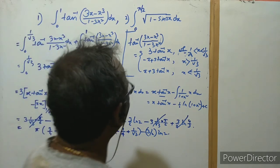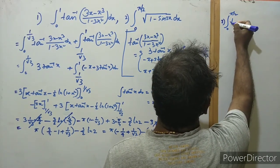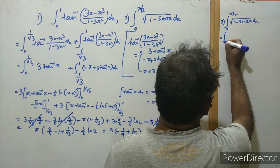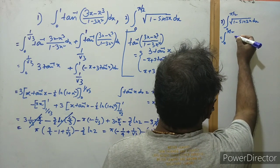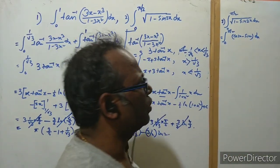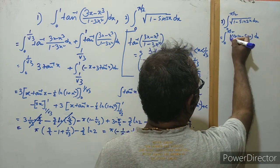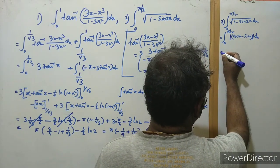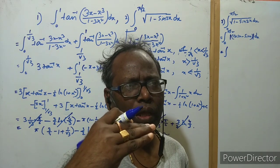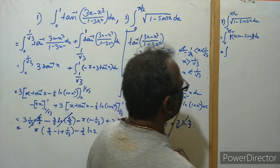Now question number 2, also a very interesting problem: the integral from 0 to π/2 of √(1 - sin 2x) dx. Most students directly write this as cos x - sin x, but that is wrong. We do not know which of cos x or sin x is larger over the whole interval 0 to π/2, so we must use a modulus sign: √(1 - sin 2x) = |cos x - sin x|.